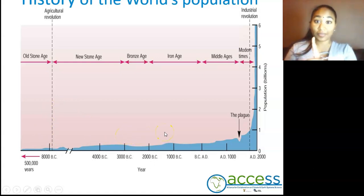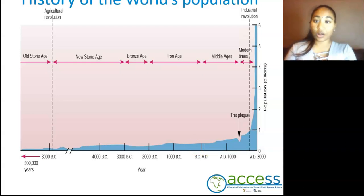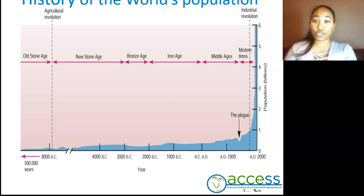However, there had been a significant drop in the population, and this is as a result of the bubonic plague, also known as the Black Death. This was an epidemic that hit the world and killed billions of people. It was a bacterial disease that was carried by rodents, which then in turn affected humans.